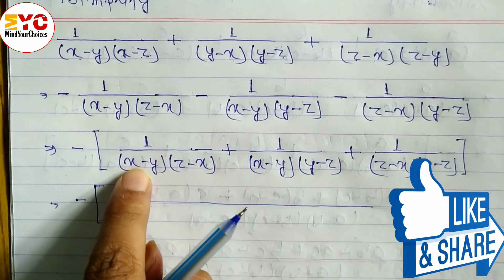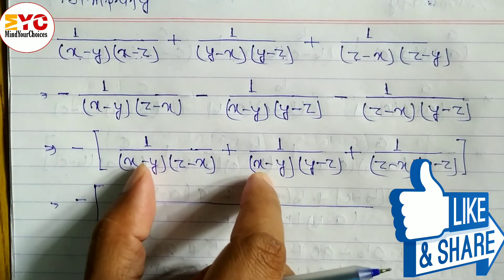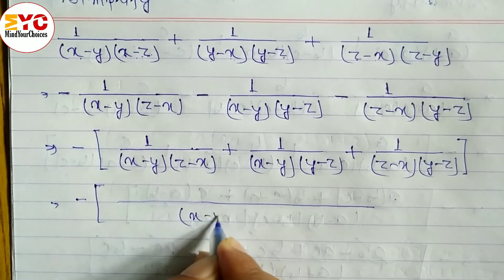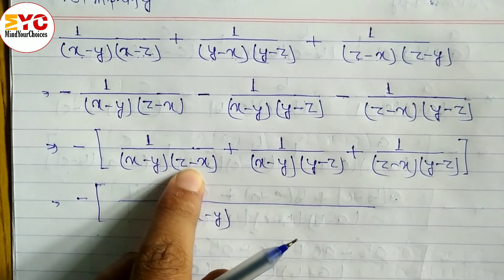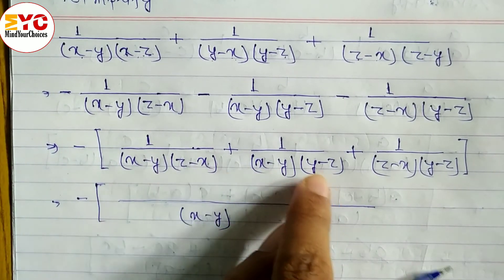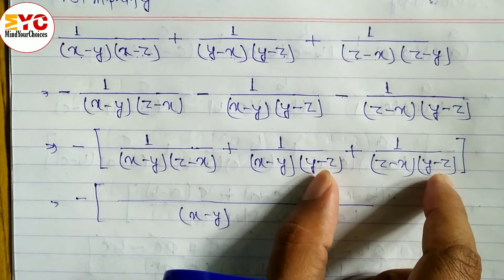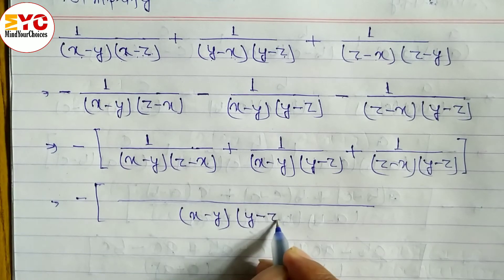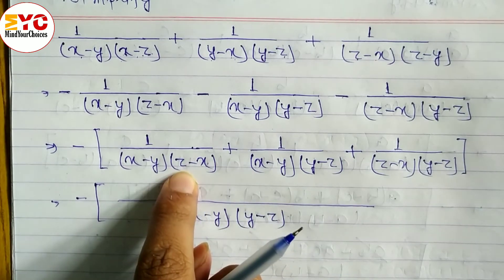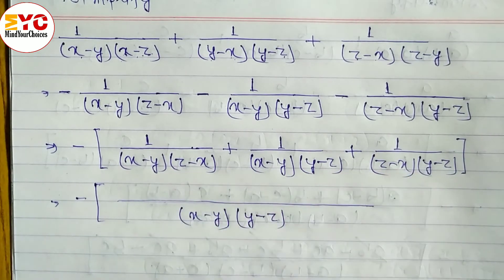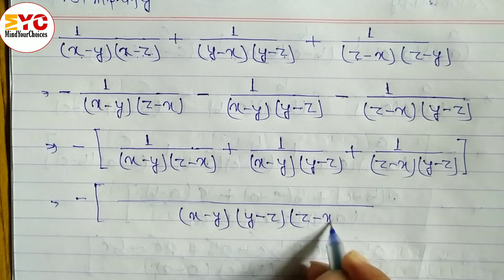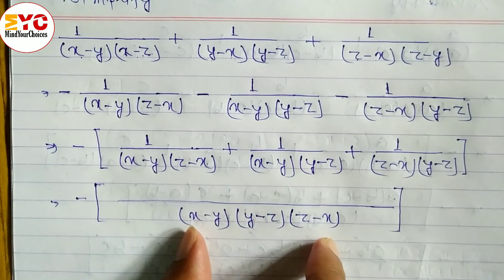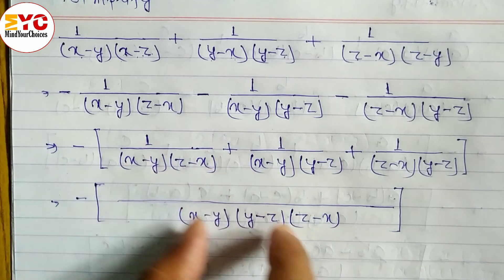Now we take LCM. The factor x minus y appears, written once. Then y minus z appears, written once. Then z minus x appears, written once. LCM is (x minus y)(y minus z)(z minus x).